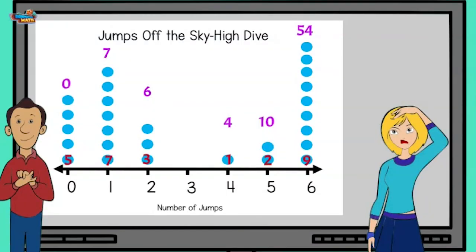To find the total amount of jumps we have to add seven plus six plus four plus 10 plus 54. For a grand total of 81 jumps. Far out.